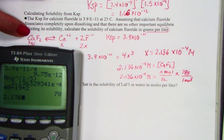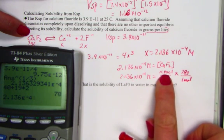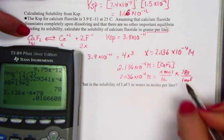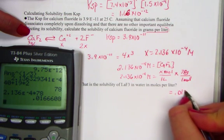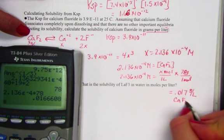All righty. So let's hit for the answer. We have 2.136 e negative 4 times 1 gives us moles. Moles times molar mass, so times 78. And we find our answer, 0.017 grams per liter of calcium fluoride.